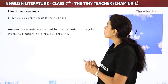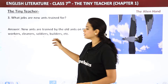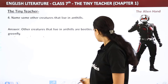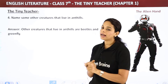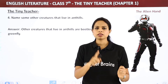What jobs are new ants trained for? They are trained for all kinds of work — workers, cleaners, soldiers, builders, etc. Other creatures that live in ant hills include beetles, other breeds of ants, and green fly. So the answer to 'name some other creatures that live in ant hills' is: beetles, lesser breeds of ants, and green fly.